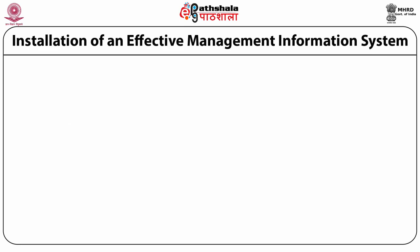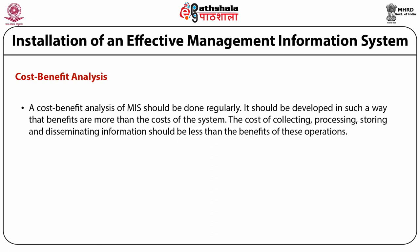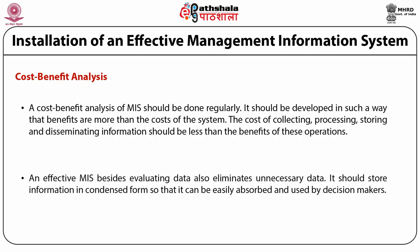The next step is cost-benefit analysis. Cost-benefit analysis of MIS should be done regularly. It should be developed in such a way that the benefits of the system are more than the cost of the system. The cost of collecting, processing, storing and disseminating information should be less than the benefits of these operations. An effective MIS besides evaluating data also eliminates unnecessary data. So it should store information in condensed form so that it can be easily absorbed and used by the decision makers.